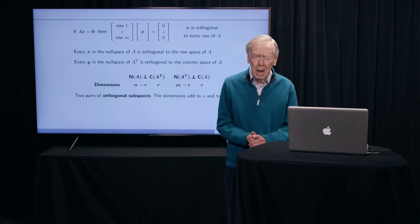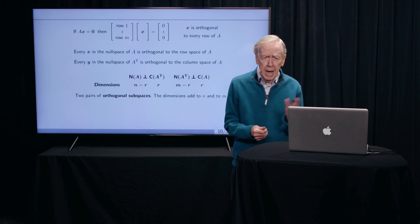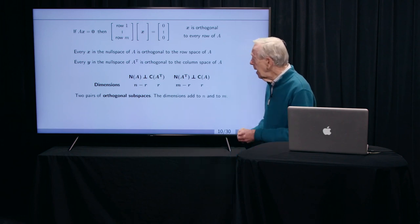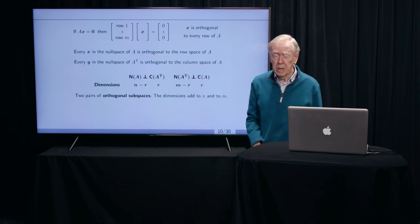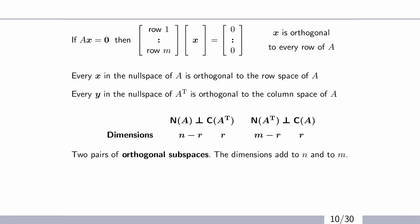In this second part, I'm going to start with linear equations, A times x equals b. And actually, the first really good starting point is A times x equals 0. So are there any solutions to the matrix, any combinations of the columns that give 0? Any solutions to A times x equals 0?